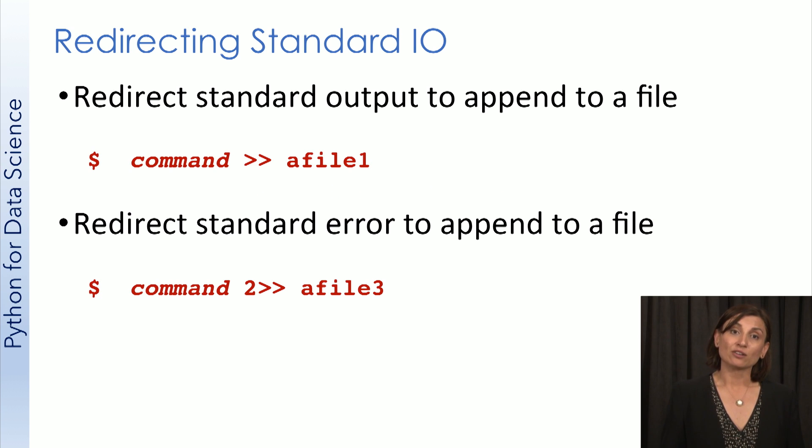Doubling the greater than operator in standard out and in standard error redirections will append to the file instead of rewriting to the file. So in this case, we see both command redirecting to a file one and instead of rewriting on the file, it appends to a file one and command redirecting the error using two greater than greater than to a file three.